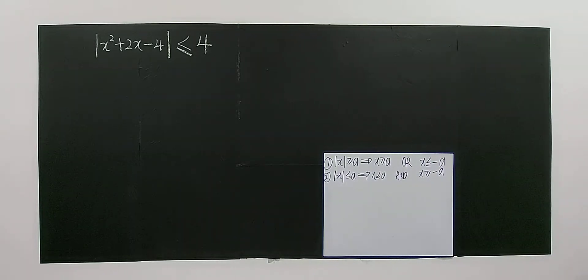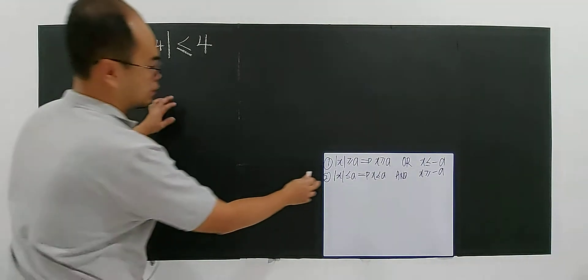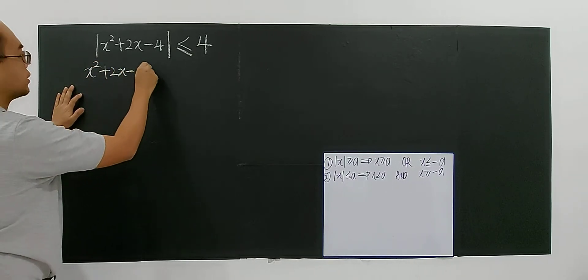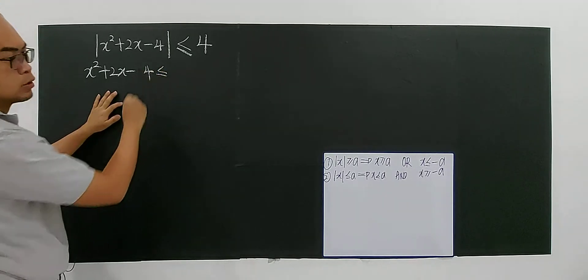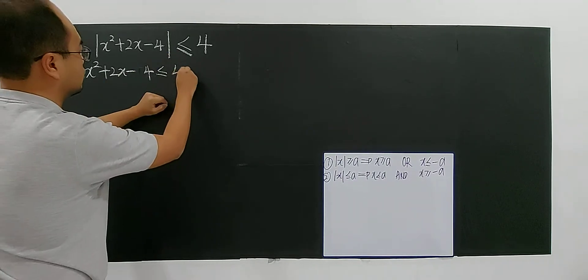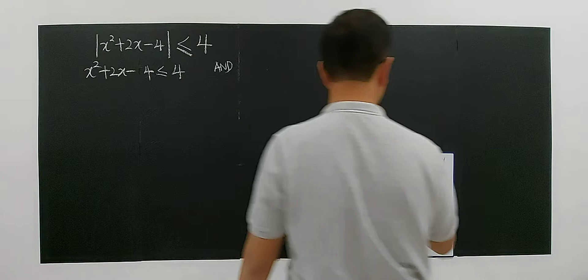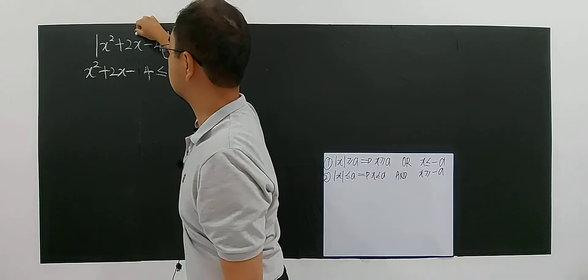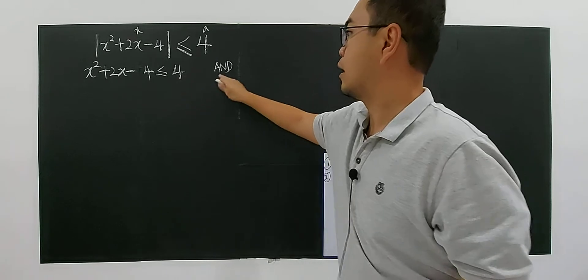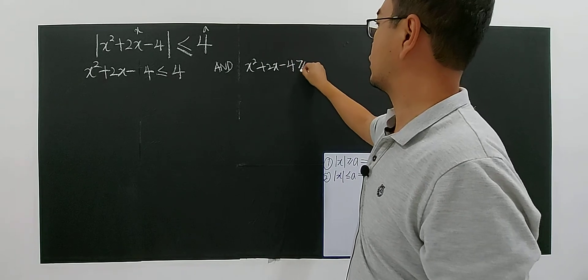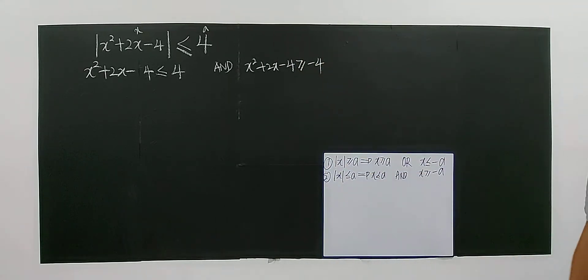Every time I write this back, it stays in my mind. Now, looking at this problem, it's the second formula — the less than or equal case. So we have x squared plus 2x minus 4 less than or equal to 4, using 'and'. This gives us x squared plus 2x minus 4 less than or equal to 4, and x squared plus 2x minus 4 greater than or equal to negative 4.